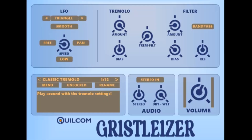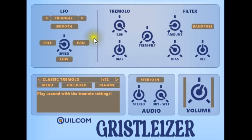My plugin version aims to remain fairly true to the original concept with a few enhancements I've made, which I think help things along a bit. So the concept itself is pretty straightforward: you have an LFO, and you have a tremolo for amplitude modulation, and you have a filter which can also be modulated from the LFO.